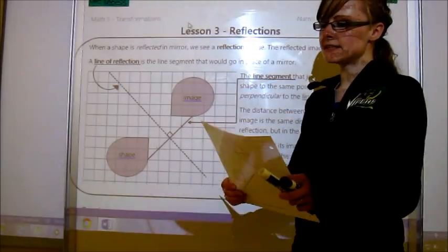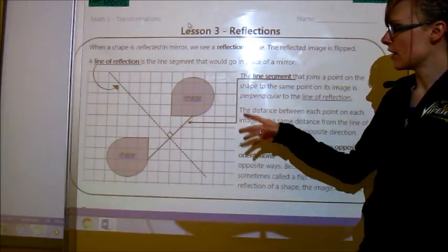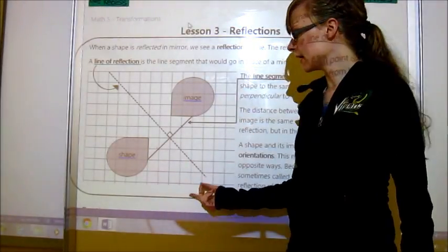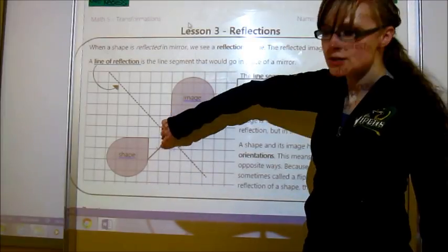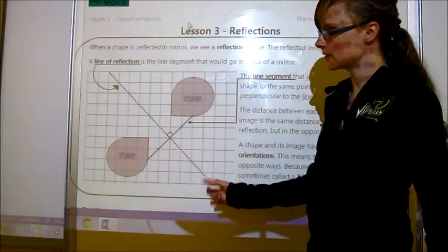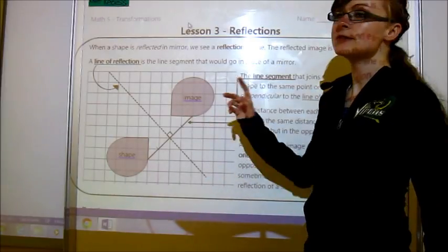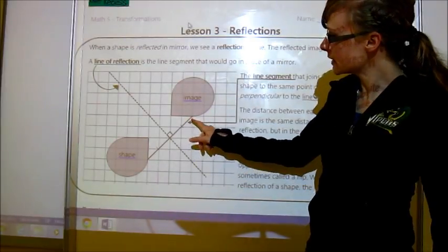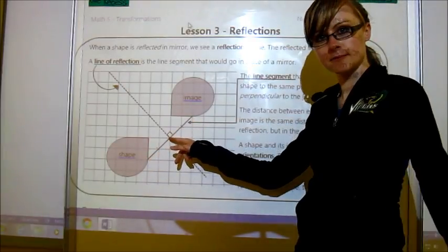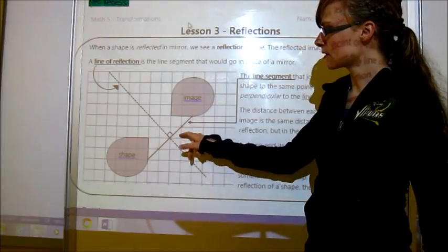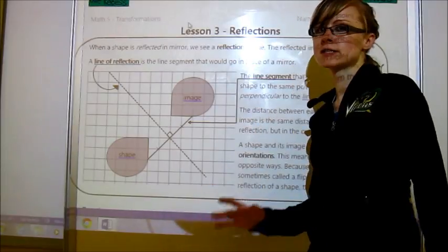The next thing that you need to know is that the distance between each pair, or between each point on each image is the same distance from the line of reflection as the other one. So that's what these hatch marks are for. Remember geometry when we used hatch marks for saying that something is the same length? Well, we're going to use that here too. So let's say that this part is the same distance from the line of reflection, or the mirror, as this part is from the line of reflection. They're just opposite. So those are the same. So that always works that way.